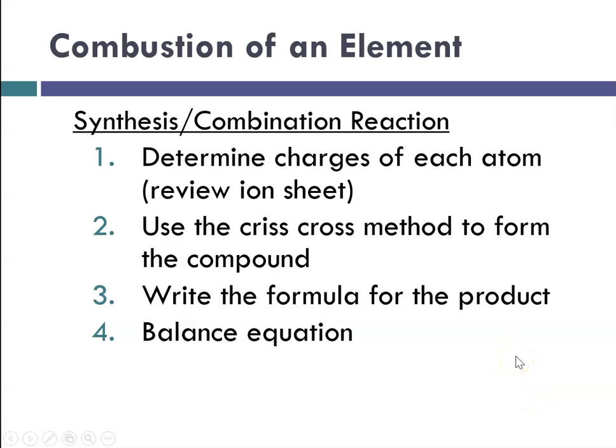So remind ourselves of the rules for predicting a synthesis or combination. First thing you have to do is determine the charges of each element, of each atom. So figure out what ion it's going to form, remembering that metals form positive ions, and oxygen, being a nonmetal, forms a negative ion. And then we use that crisscross method to crisscross the charges to get the formula with the correct subscripts. Then you write that formula and you balance your equation.